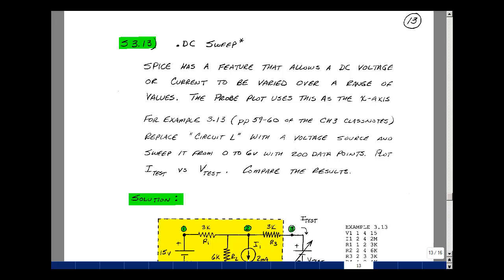The SPICE program and the PSPICE program has a feature that allows the user to vary a DC voltage or a DC current source over a range of values. In PSPICE we use the graphical output interface called Probe to plot our results, and it's going to take the swept voltage and put it on the x-axis.